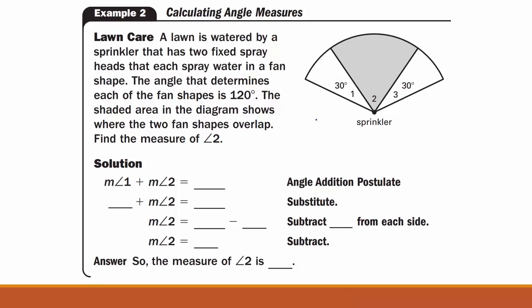Well, I know that the sprinkler head, if I'm looking at the sprinkler head, which is number 1, it actually goes all the way over here and then overlaps with sprinkler head number 3, so that this shaded region is the region where the two sprinklers overlap. So, I know that the measure of angle 1 plus the measure of angle 2 is 120 degrees. That's what it says over here.